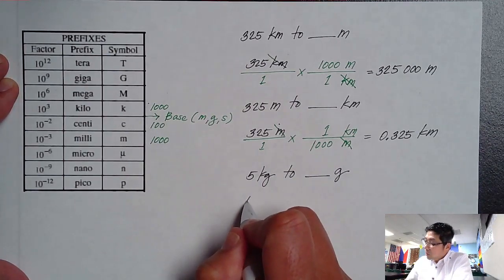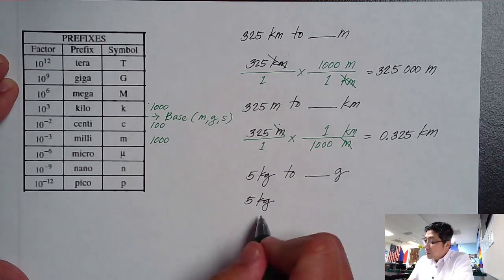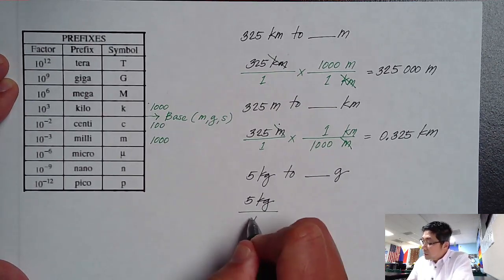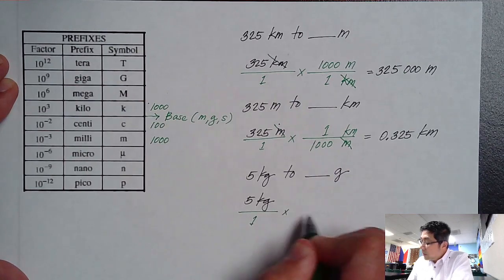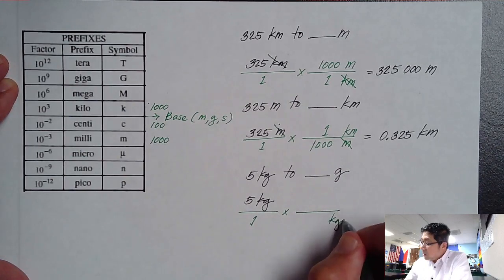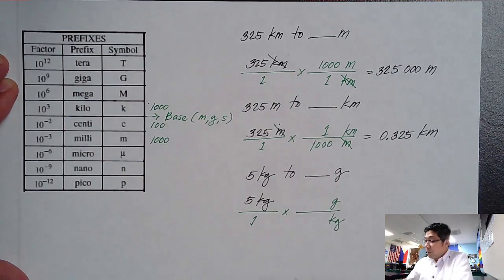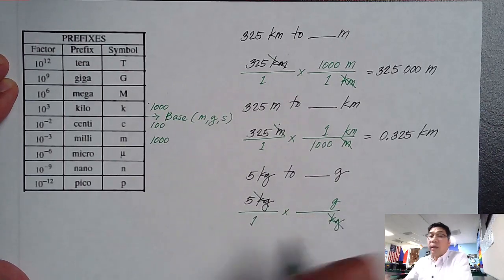First step: 5 kilograms divided by 1, and then you multiply it by your bar. Kilogram goes on the bottom part and we have to convert it to grams, which is on the top. Kilograms and kilogram cancels out.